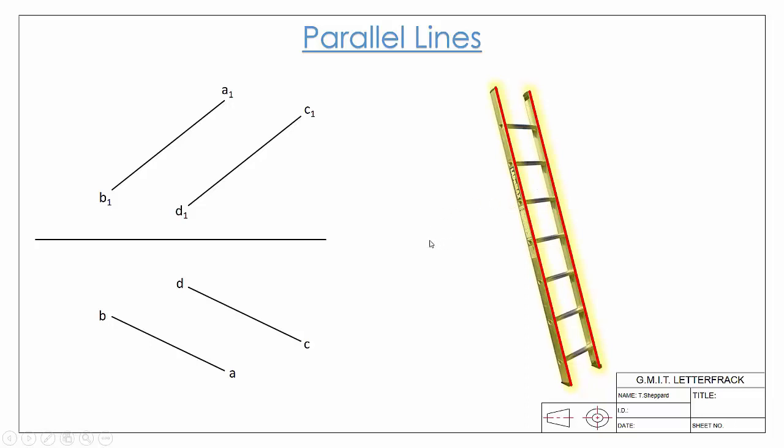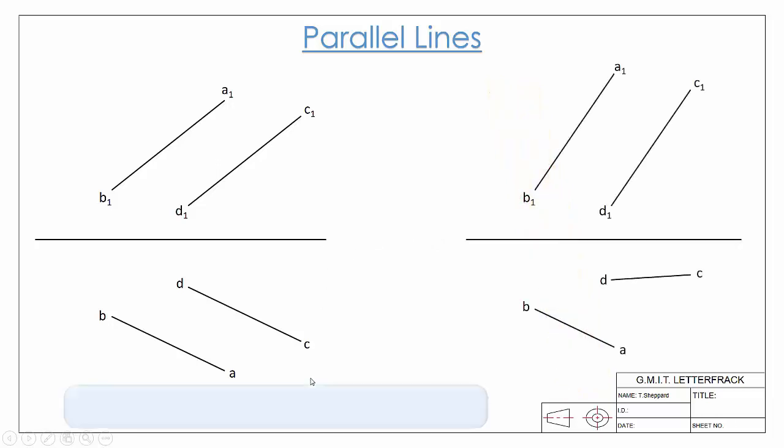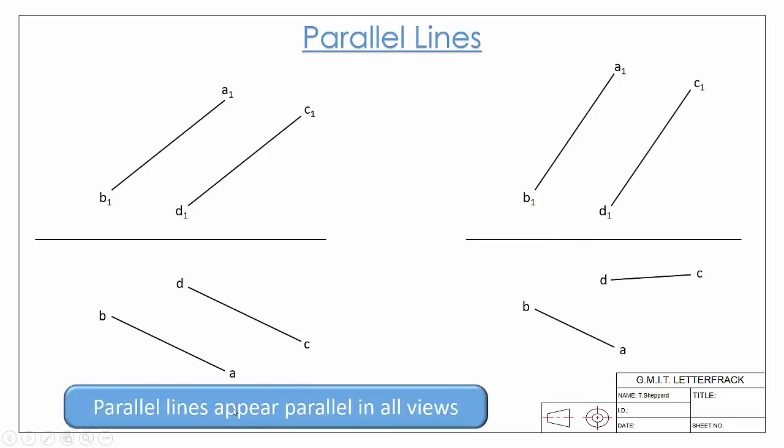How do we identify if lines are truly parallel in our plan elevation? Parallel lines always have to appear parallel in all views. So if we look at our example here...